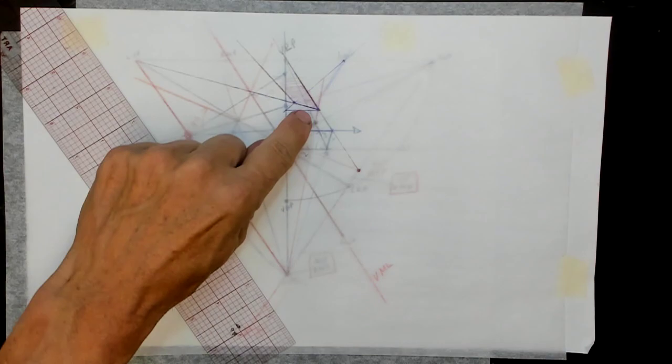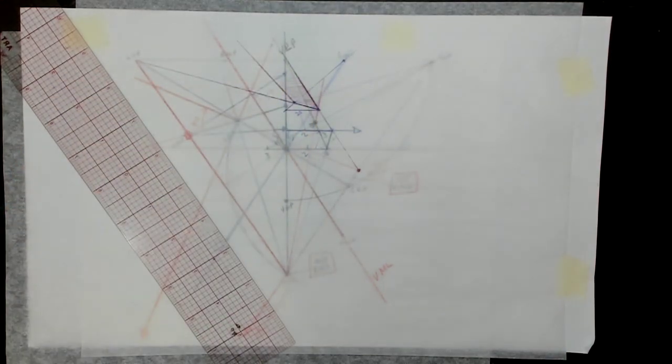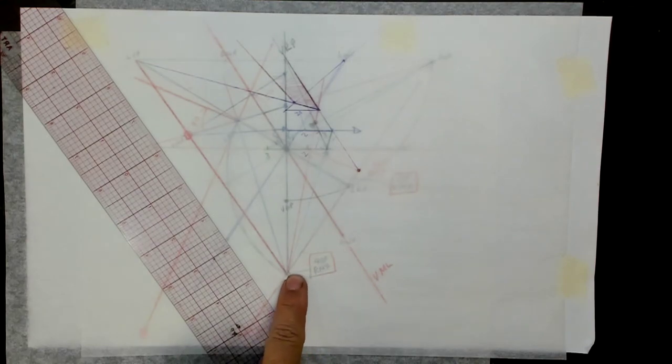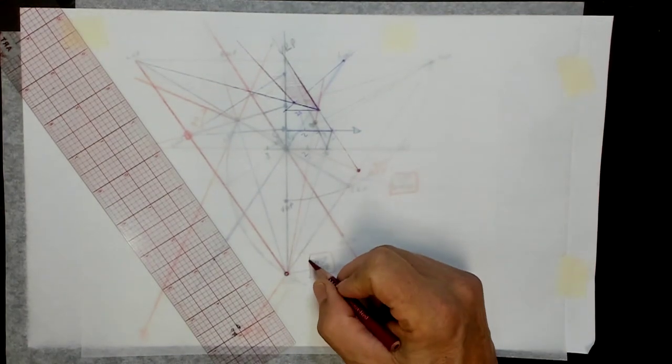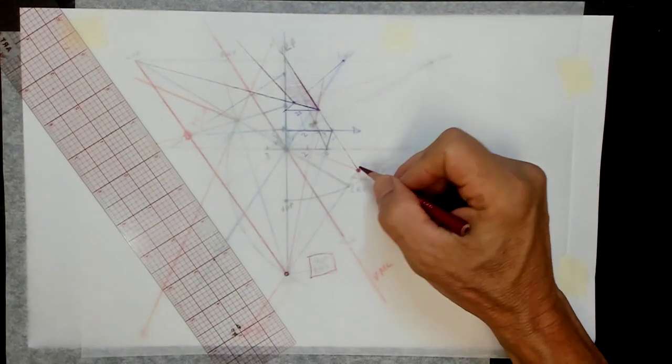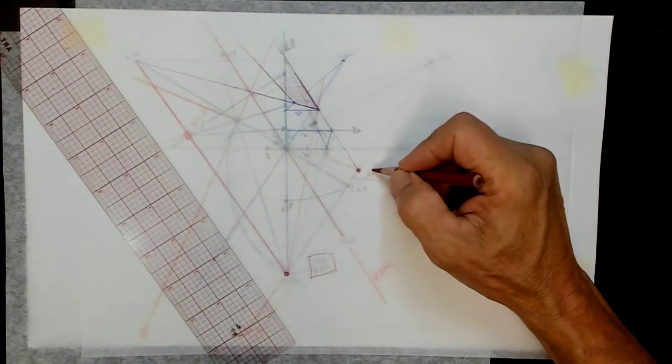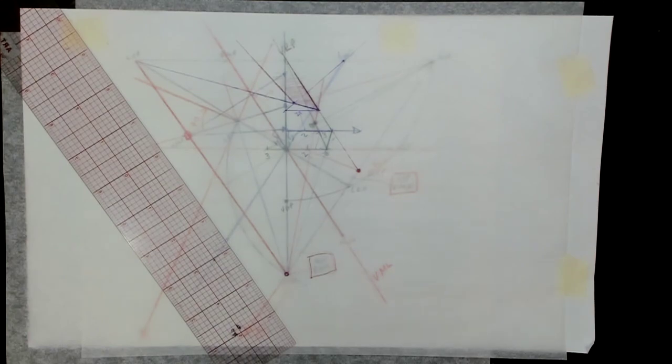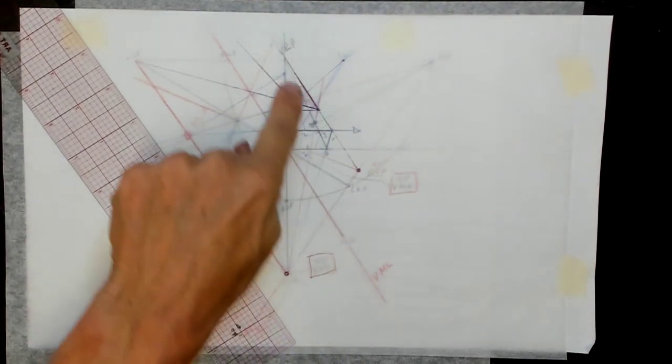And we need to make this also two, and we already have our measuring point here from a couple videos ago, and it happens to be right in the same spot as our vertical vanishing point. So this is our vertical measuring, our right measuring point for this, for the incline.